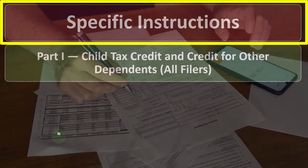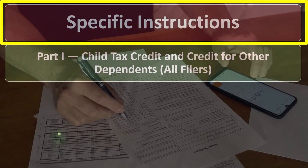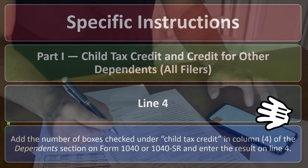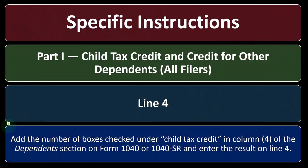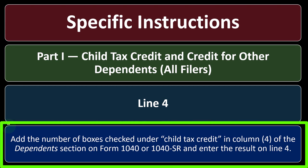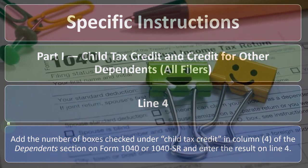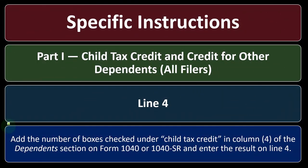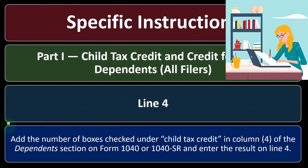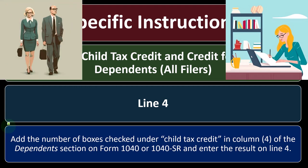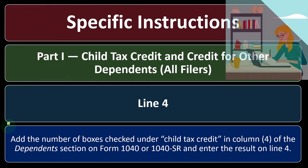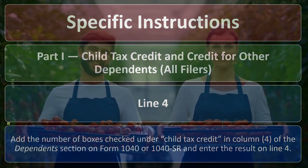Specific Instructions, Part One: Child Tax Credit and Credits for Other Dependents, all filers, line number four. Add the number of boxes checked under 'child tax credit' in column four of the dependents section on Form 1040 or 1040-SR and enter the results on line four. On the first page of Form 1040, you have your personal information, social security number, your spouse's social security number, and your dependents' social security numbers. In the dependents section, you check off if they qualify for the child tax credit or other dependent credit. You cannot have both checked — just one or the other.